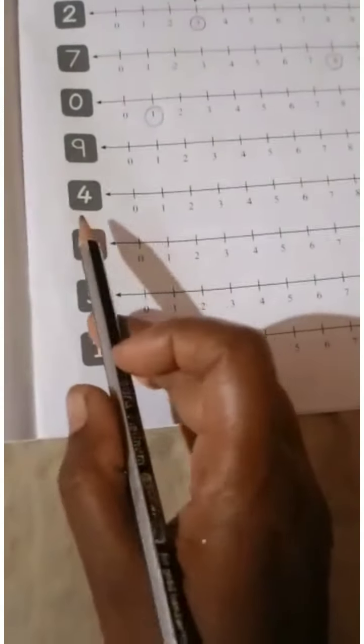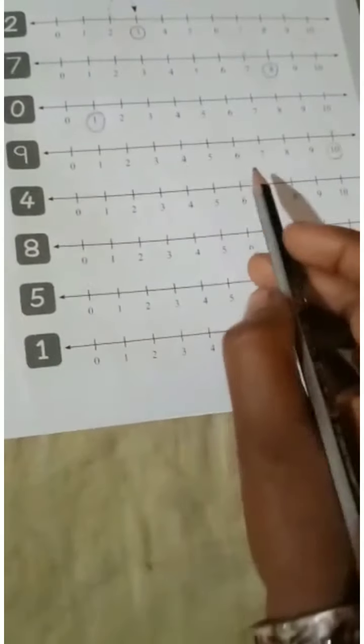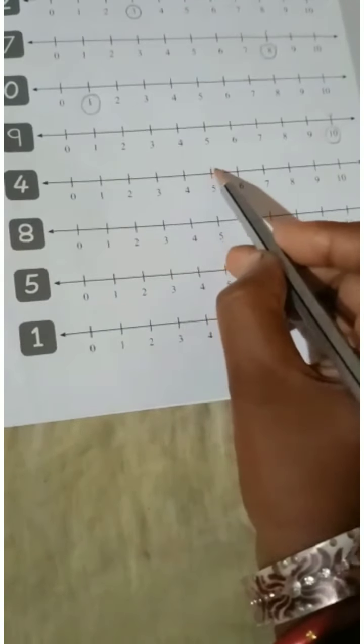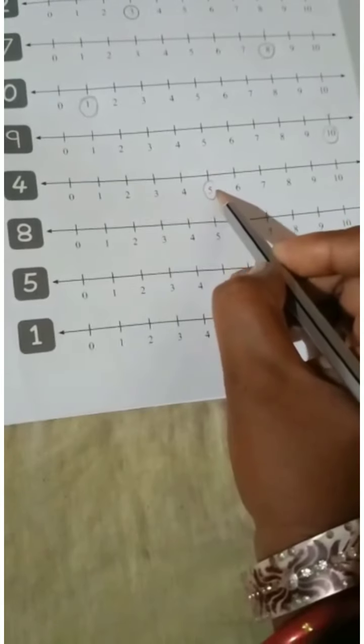Four - what comes after 4? Five. Eight - what comes after 8? Nine.